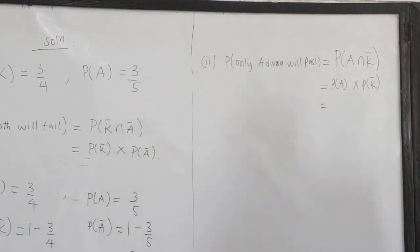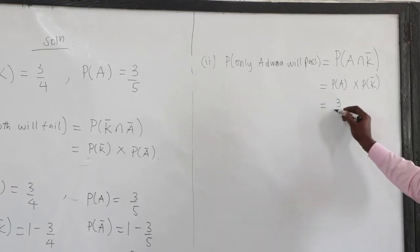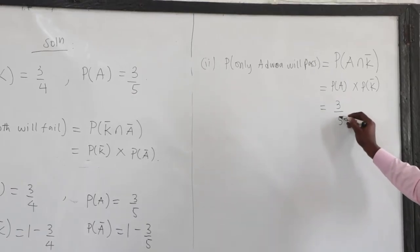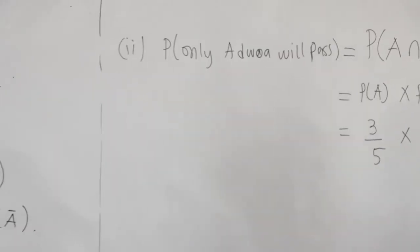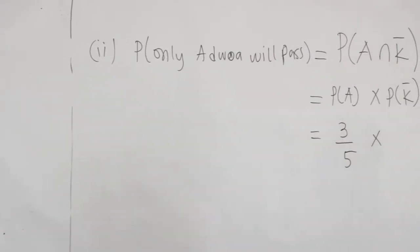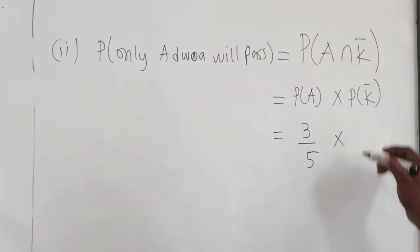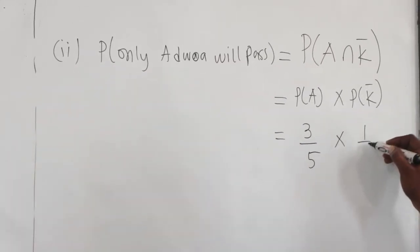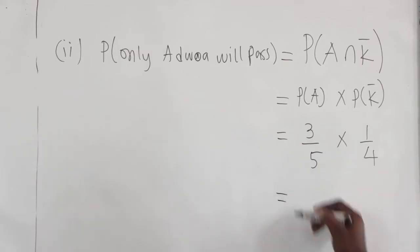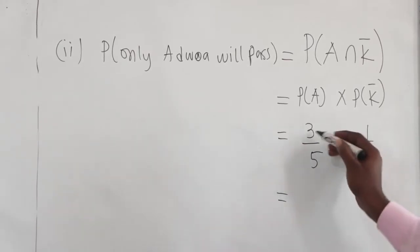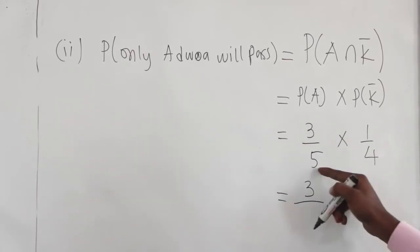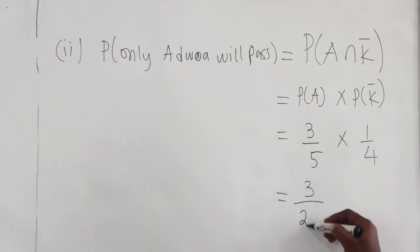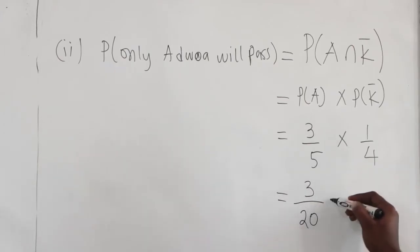What is P of A? The probability that Ajuwa is passing is 3 over 5. What is the probability that Kujou is not passing? That is 1 over 4. So this is 3 times 1, that is 3, over 5 times 4, that is 20. The answer is 3 over 20.